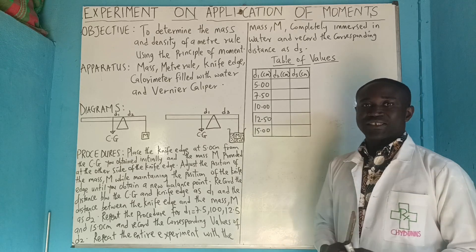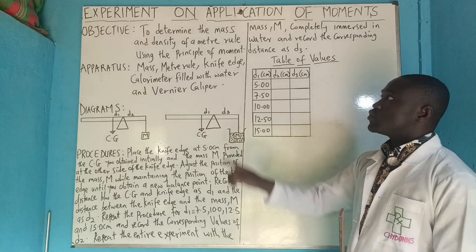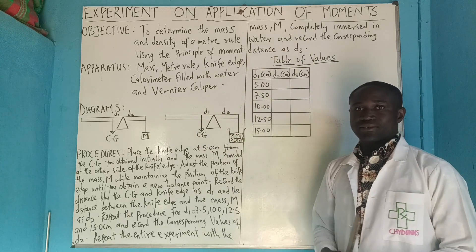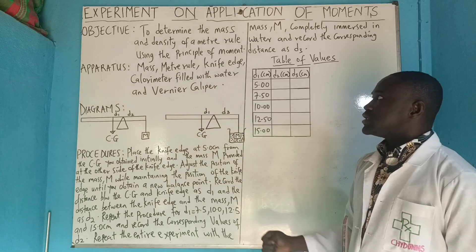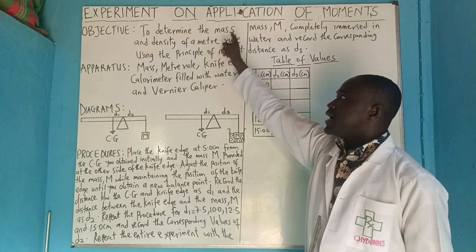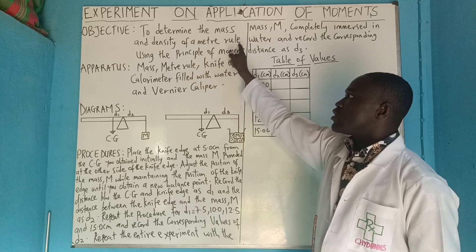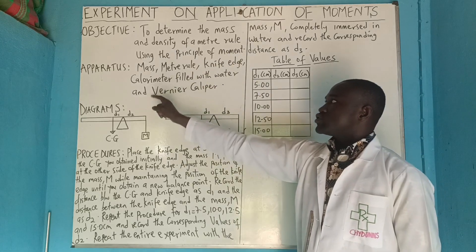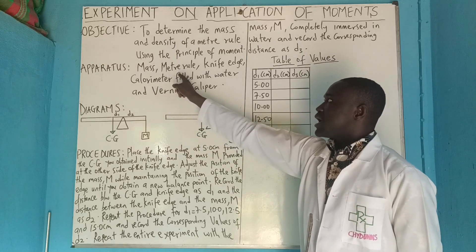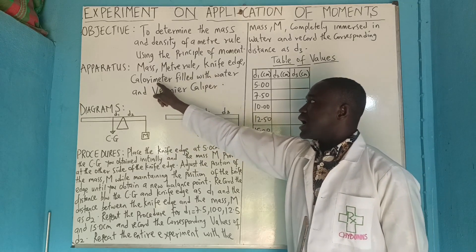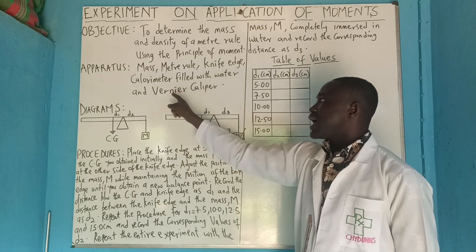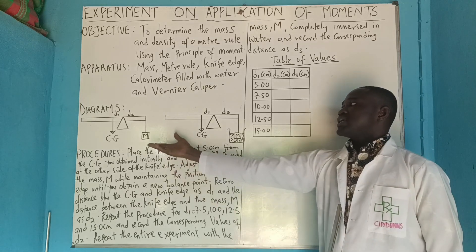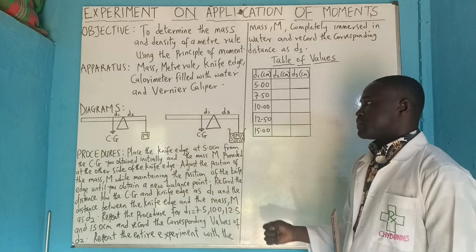Welcome again to today's class. Today we want to discuss an experiment on the application of moments. The objective is to determine the mass and density of a meter rule using the principle of moments. The apparatus needed includes: a mass, a meter rule, a knife edge, a calorie, a metal filled with water, and a vernier caliper.